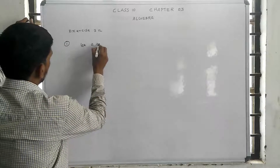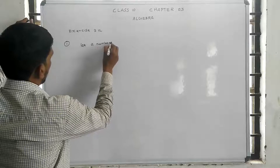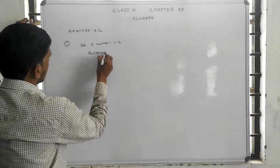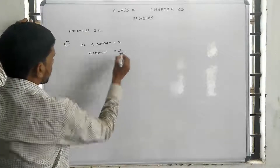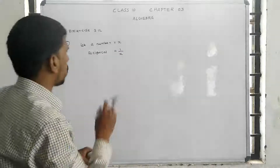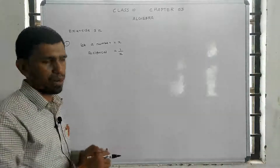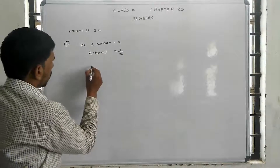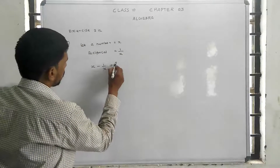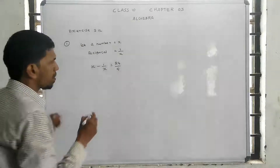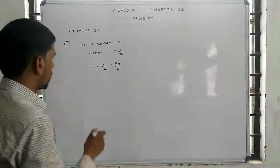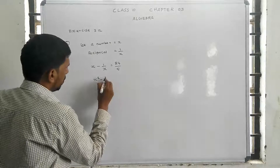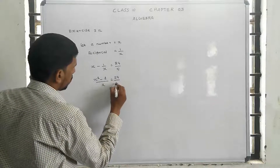Let's say the number and its reciprocal. We need to subtract. x minus 1 by x is equal to 24 divided by 5. Taking LCM: x squared minus 1 divided by x is equal to 24 divided by 5.